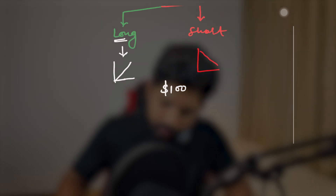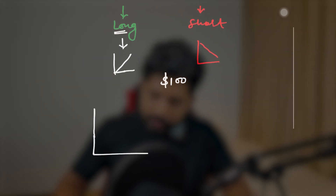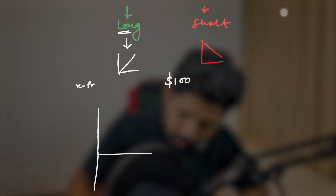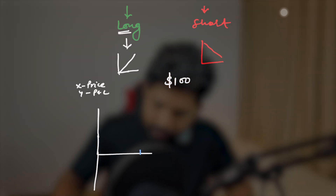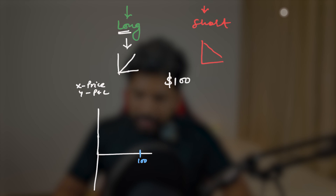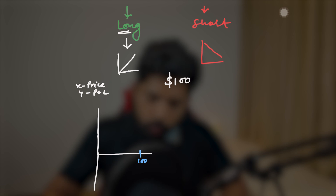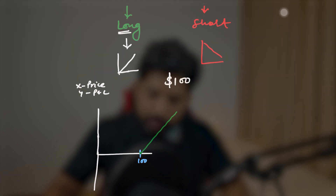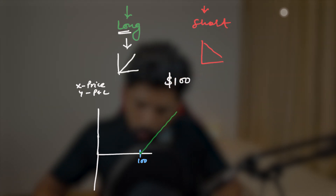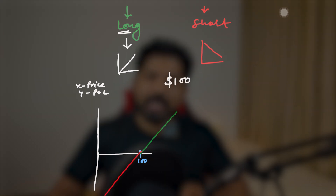So I'll draw a chart here. This is the price on X and P&L on Y. The current price is $100. If you buy this stock and go on a long trade, if the price increases then you will be having the benefit. If the price decreases, then you will be in loss. I can draw it like this — we can say this is a linear graph.